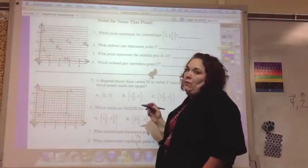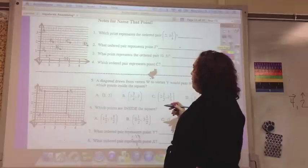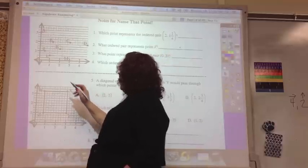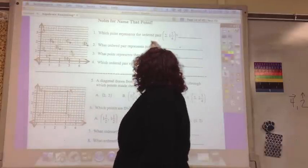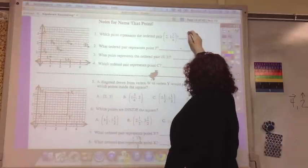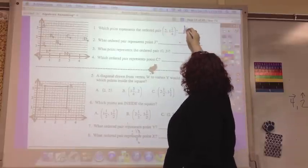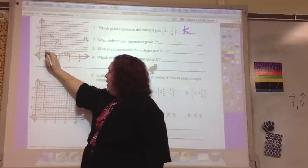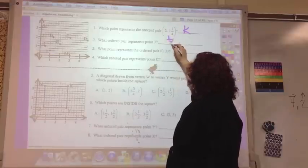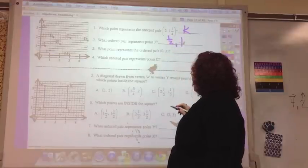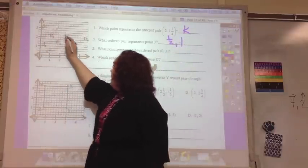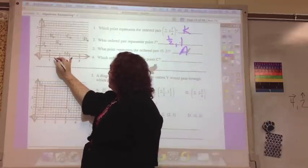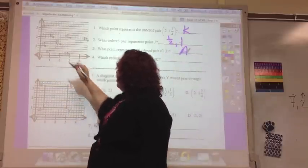And then this was in your notes from today. Which point represents the ordered pair 2 and one-fourth? 2, one and one-fourth is K. What ordered pair represents J? It's one-half, one. One-half over, up one. What point represents the ordered pair 0, 3? That's A. And which ordered pair represents C? It's three over and up two.